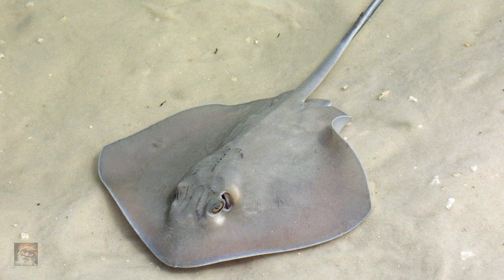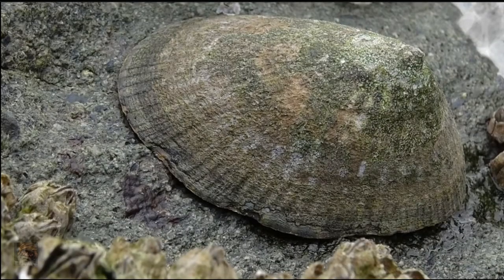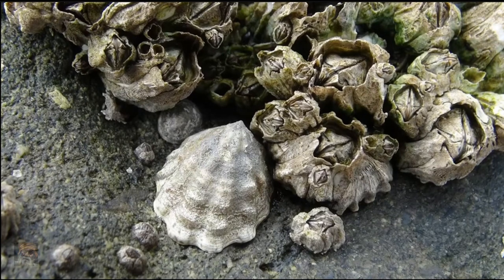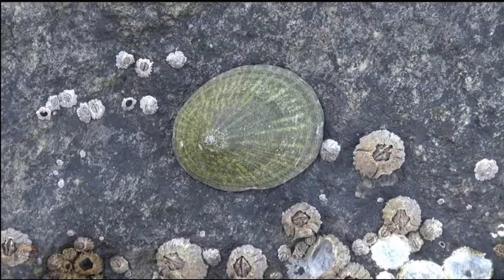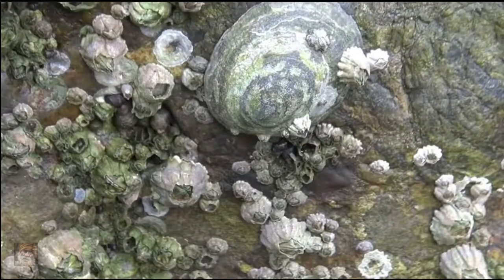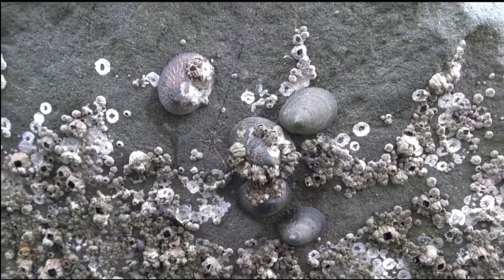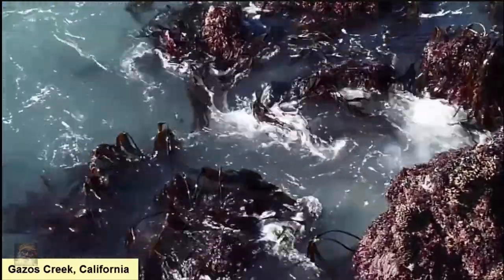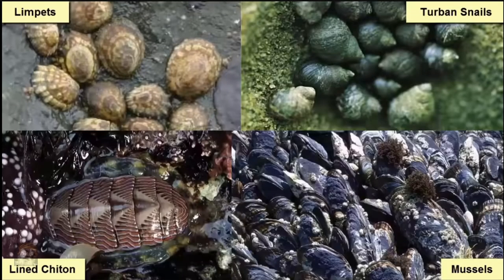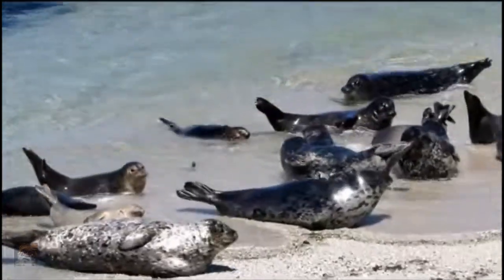Intertidal zones are marked by vertical zonation. Different organisms live in different zones in the tidal range depending on how much water reaches them. This zonation can often be seen vertically, with dry plants near the top of the tidal zone and seaweeds near the bottom. The intertidal zone can be broken into four major mini-zones. The highest is called the splash zone — this area is splashed by water and mist during the high tide but is never fully underwater. Barnacles live on rocks in the splash zone, and many marine mammals such as seals and otters can also live there.